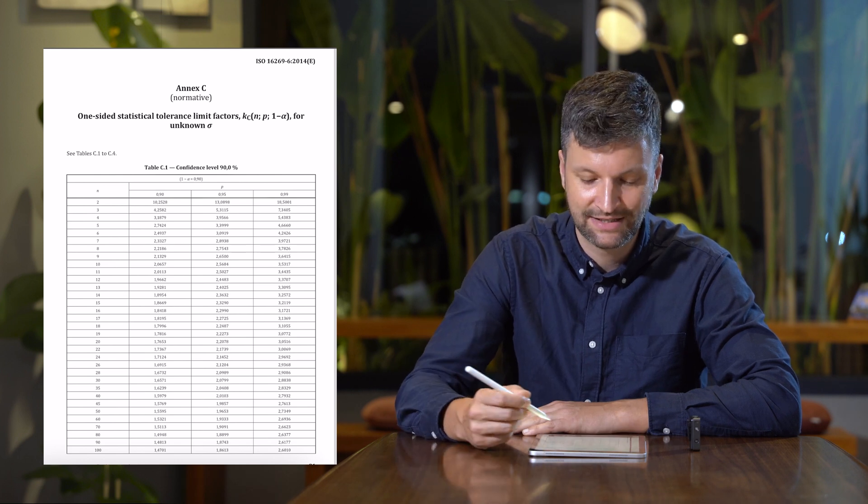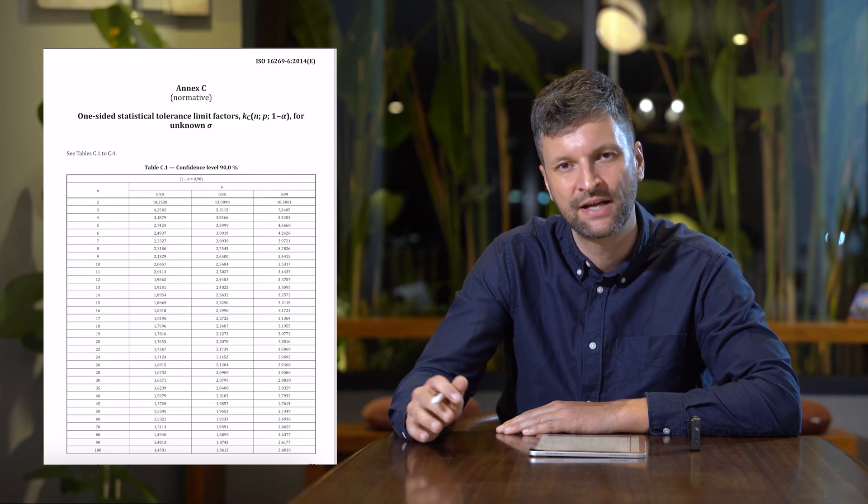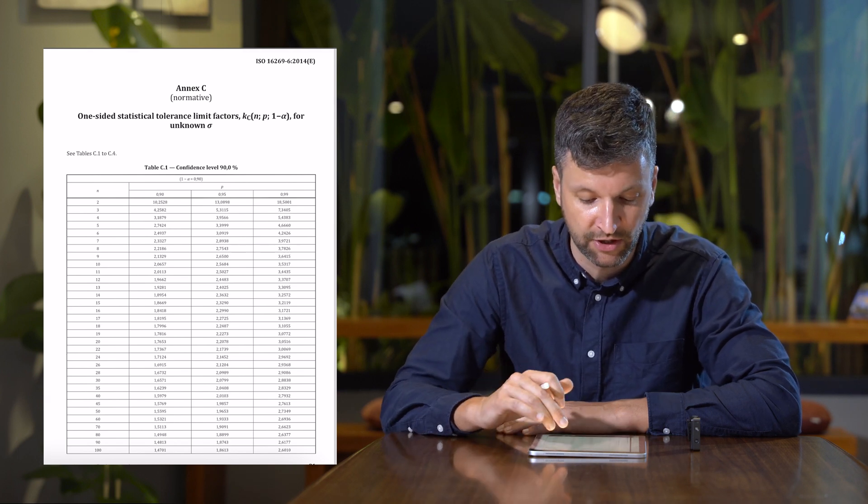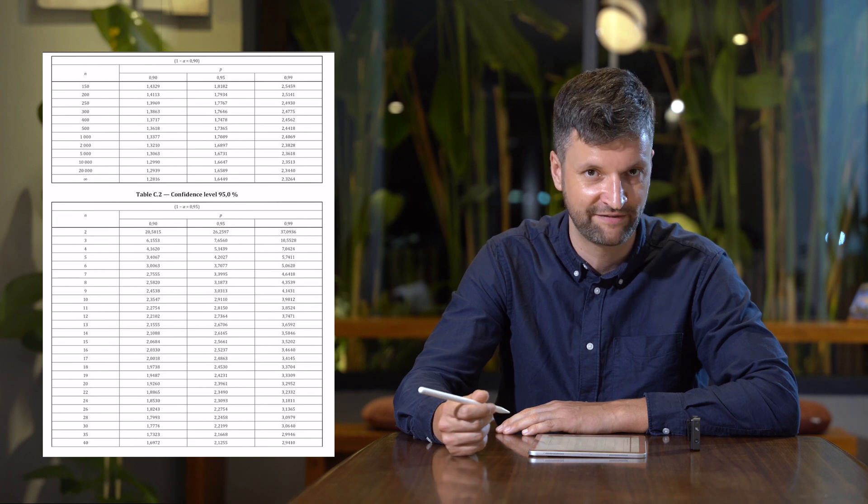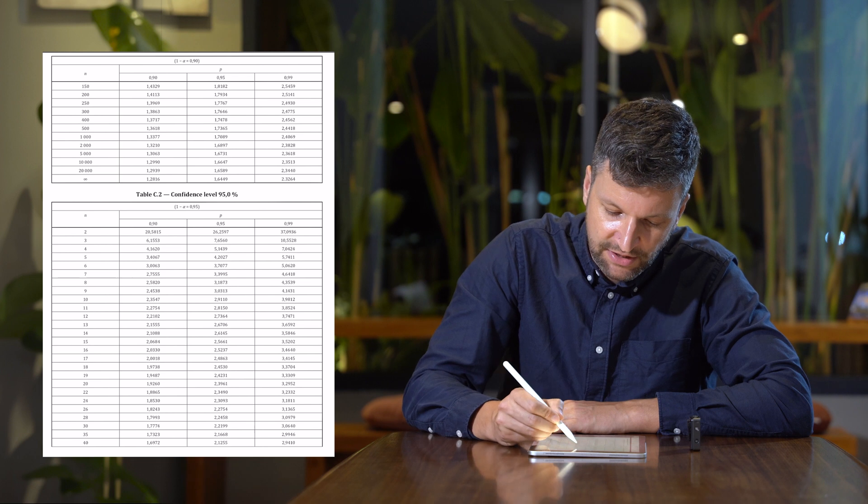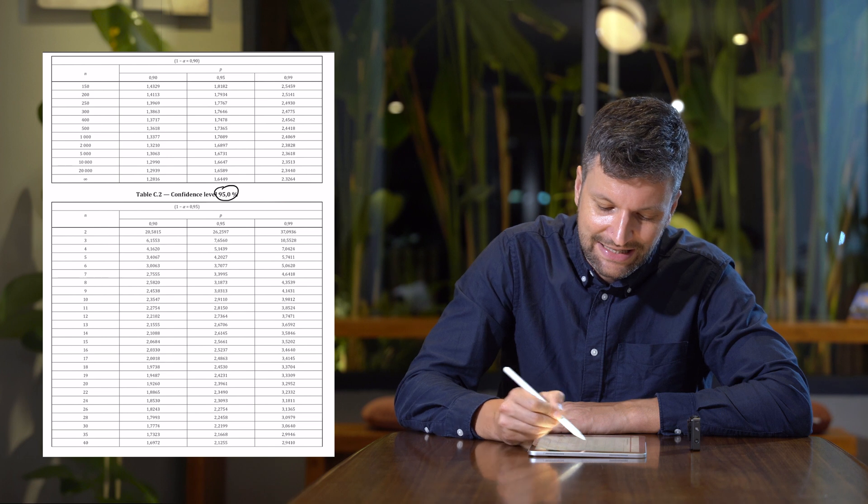The first thing that you see is the confidence level. The confidence level and the probability or reliability level is determined by your risk management. In this example, we have here in Table C1 the confidence level of 90%, and in Table C2 we have a confidence level of 95%. For this example, we go with a confidence level of 95% and a reliability level of also 95%.